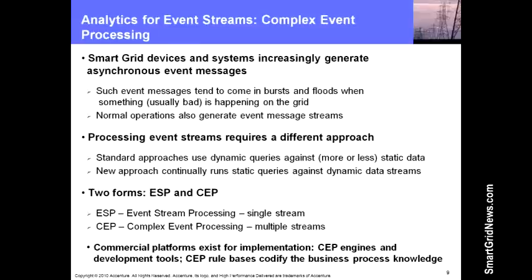We need some special processing tools, especially for the fourth class of data. Complex event processing is a primary tool for handling event streams. We found this to be an incredibly important tool. There are excellent commercial platforms for the implementation of complex event processing. The rule bases that you develop for this codify the business process knowledge that you need to do your smart grid implementations.